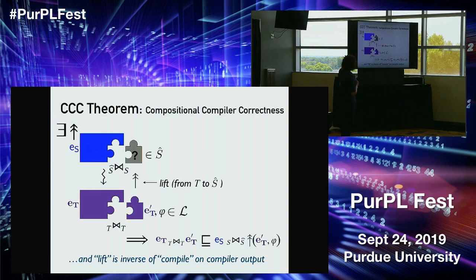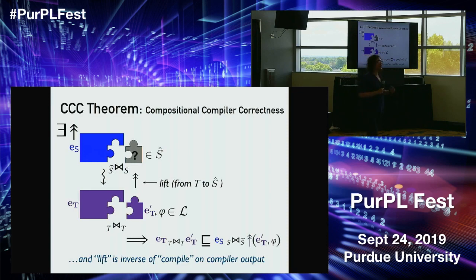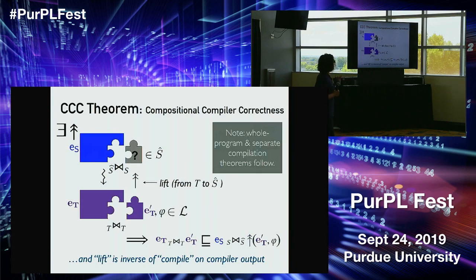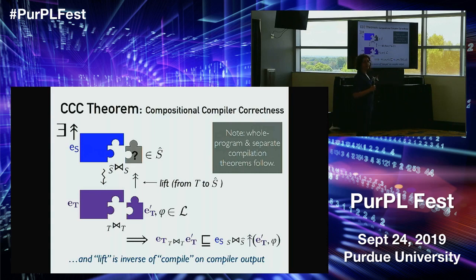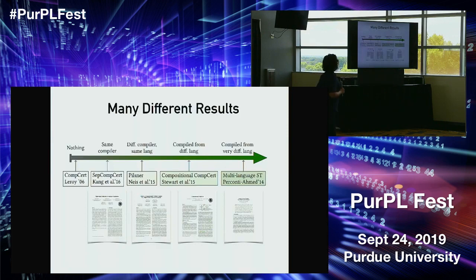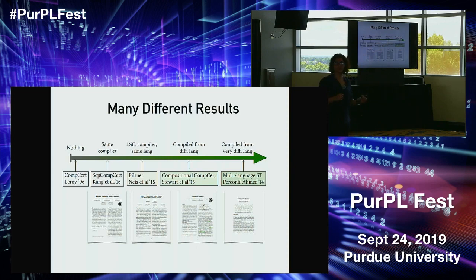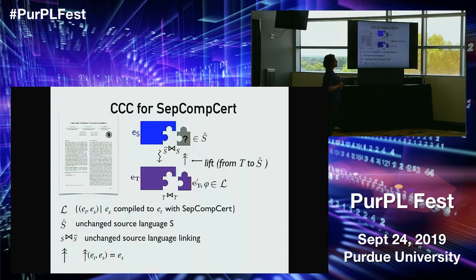We have one extra sanity condition on the lift relation: it must be inverse to compile on the compiler's own output. We kept these conditions on lift minimal. CCC, if it's to be a standard definition the entire community can use, should obviously imply whole-program compiler correctness and separate compilation correctness. Now let's go back to the different results and see how instantiating CCC's parameters reveals their pros and cons.